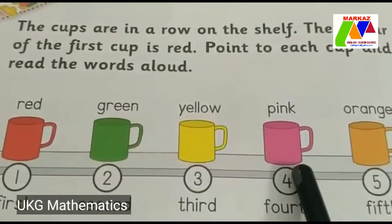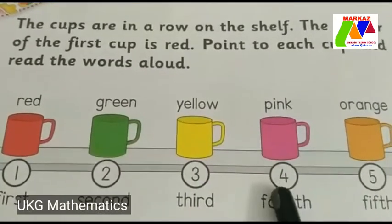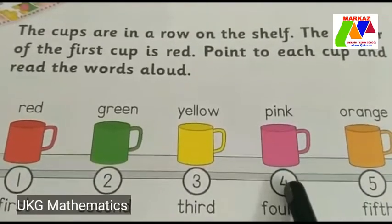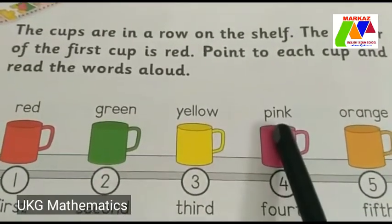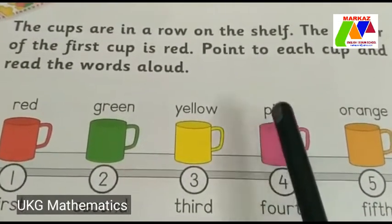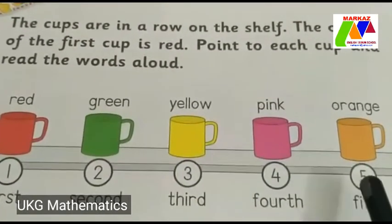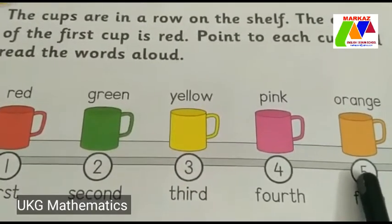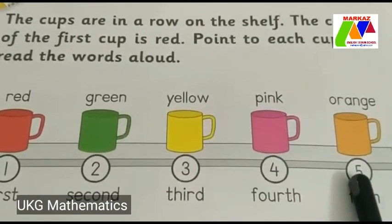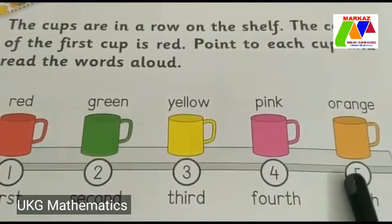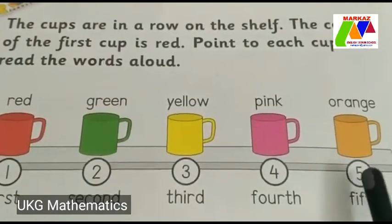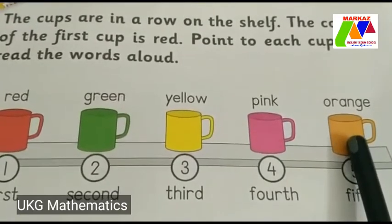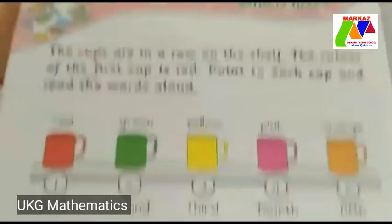The color of the fourth cup — this is fourth position. The fourth cup is... which color, children? Pink. Very good. Then, last one — which position? Fifth position. The color of the fifth cup is... which color, children? Orange color. Very good. Orange color.